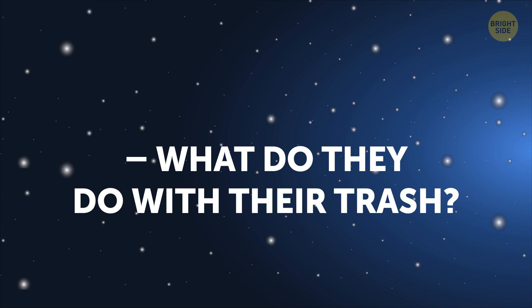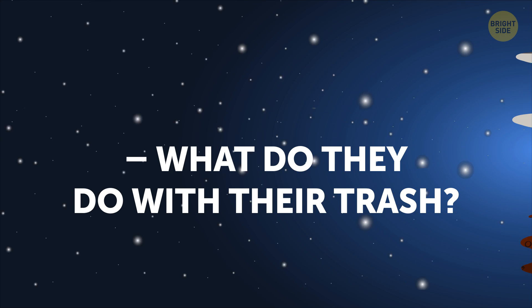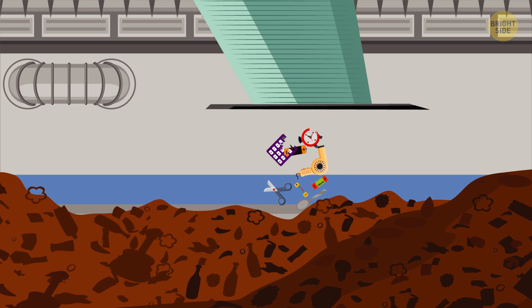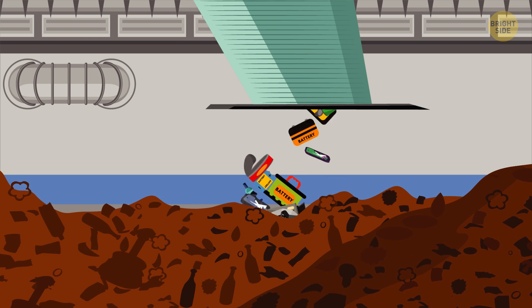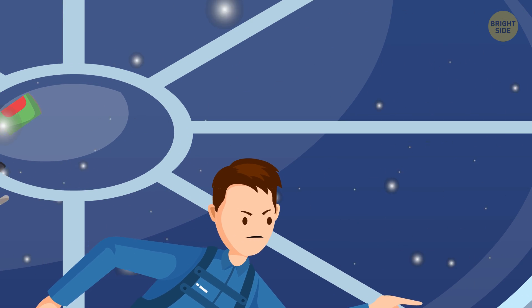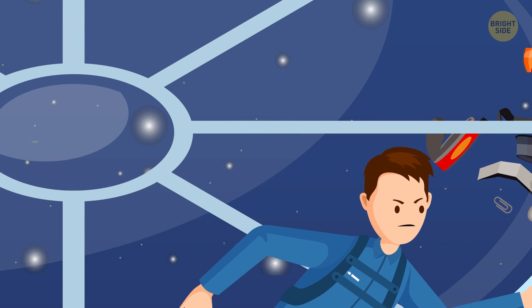What do they do with their trash? Well, just like you and me, astronauts have garbage too. Disposable utensils, used towels, raw materials, empty food packets, you name it. You'd think they could just chuck it out into the endless void of space, but that would be littering.